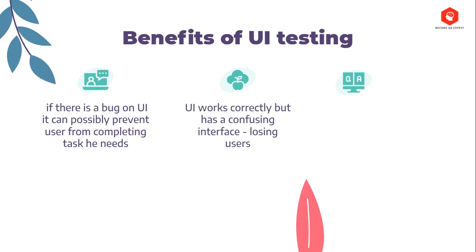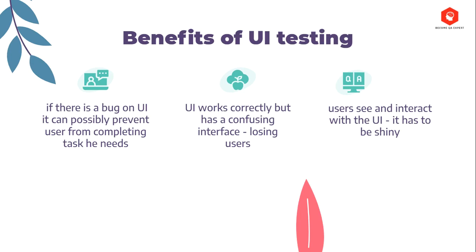Second, UI works correctly but has a confusing interface — that results in you losing users. The user will abandon it and move to another more user-friendly application. If you install a new application on your phone, try it for a bit, and conclude that it has a bad UI, a slow UI, or it simply does not fulfill your visual expectations, you will very likely uninstall it right away and install another one. Users see and interact with the UI — that's the way they communicate and use the software.